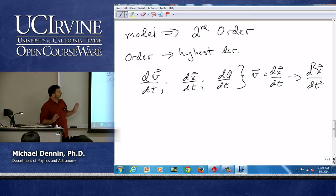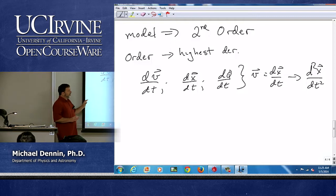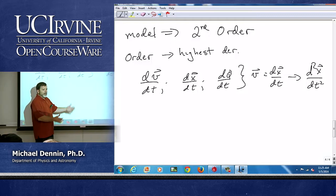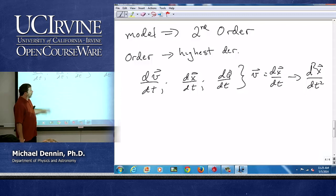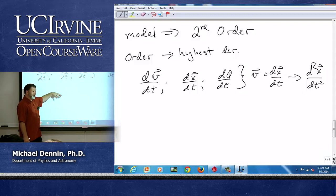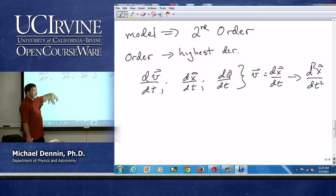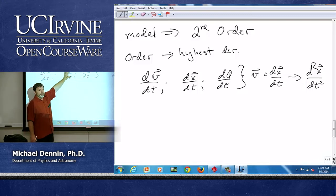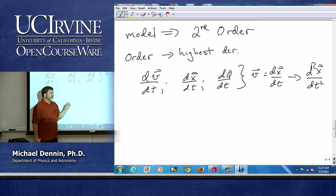So yes, to fully know everything you have to go to higher order derivatives at times, but the reality is the thing we're interested in how it evolves is either the quantity itself, its first derivative, or its second derivative. So very rarely will you see anything other than a second order differential equation in physics.